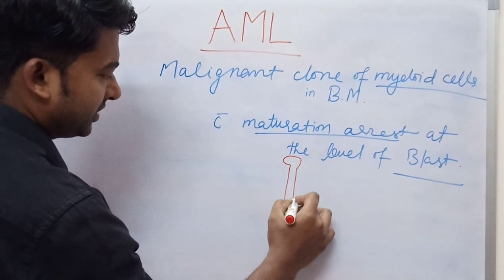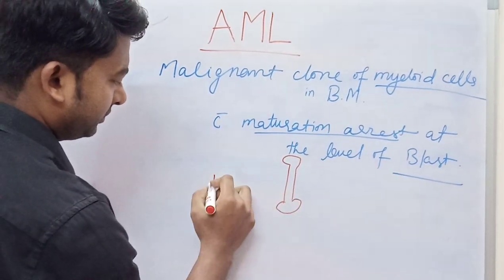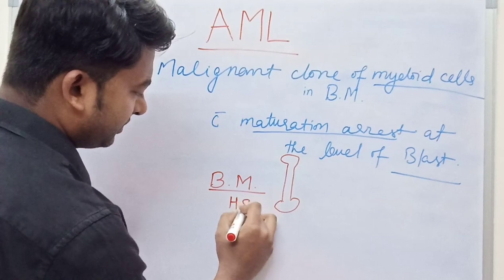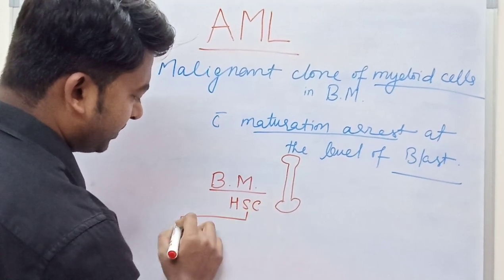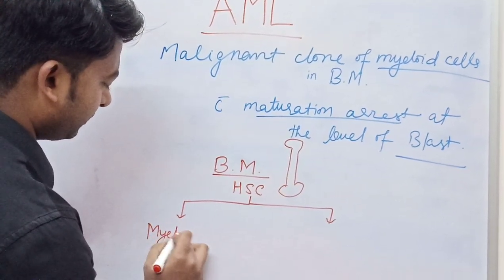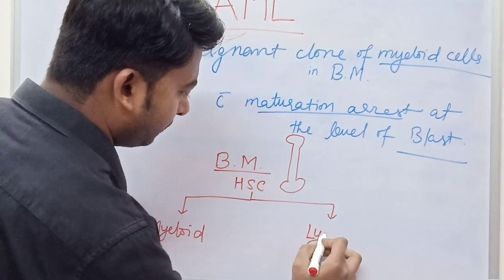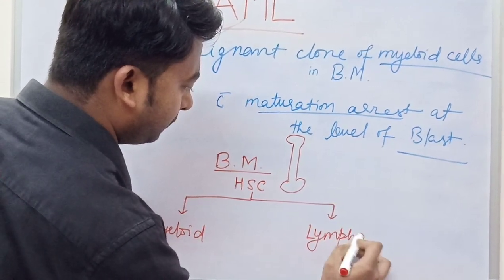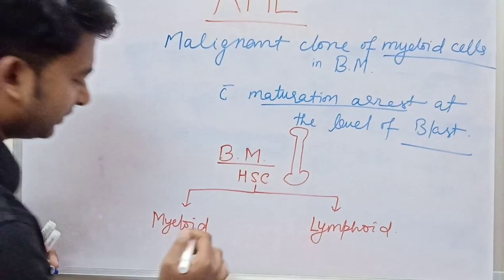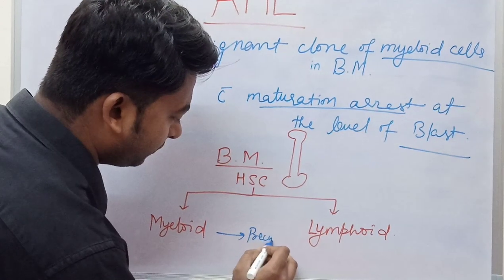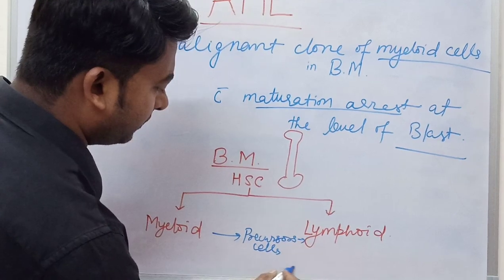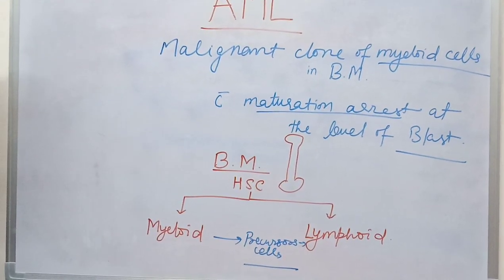Let's understand this. Suppose this is our bone marrow — this is the bone, it has got bone marrow. Bone marrow has hematopoietic stem cells. It differentiates into myeloid and lymphoid cell lines, which are known as precursor cells.